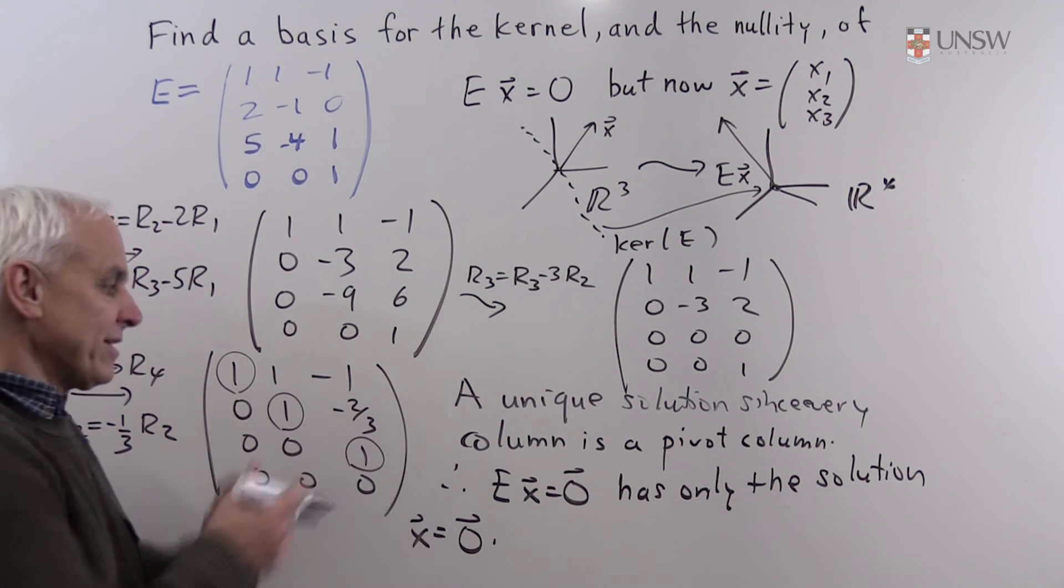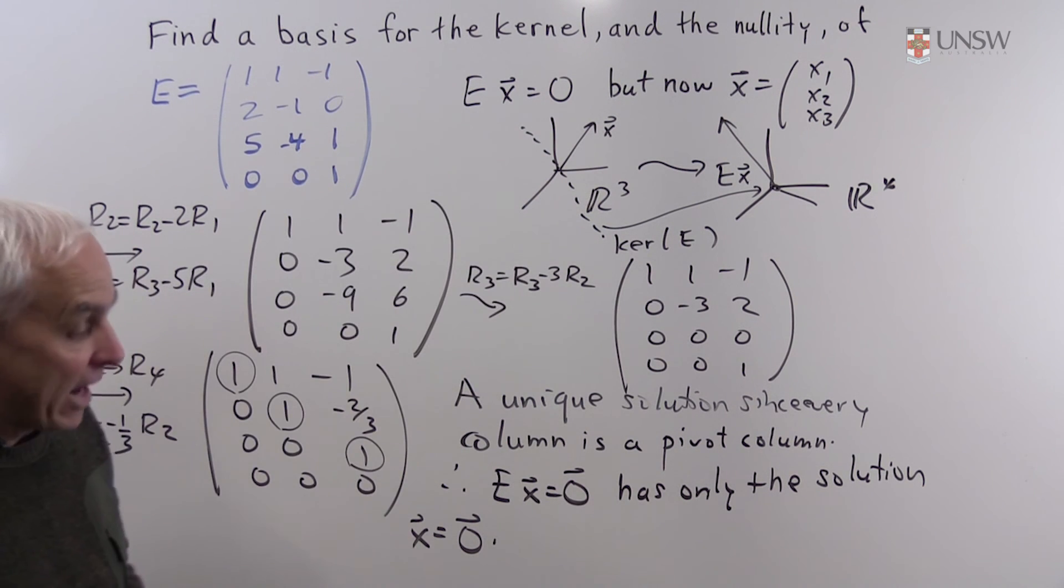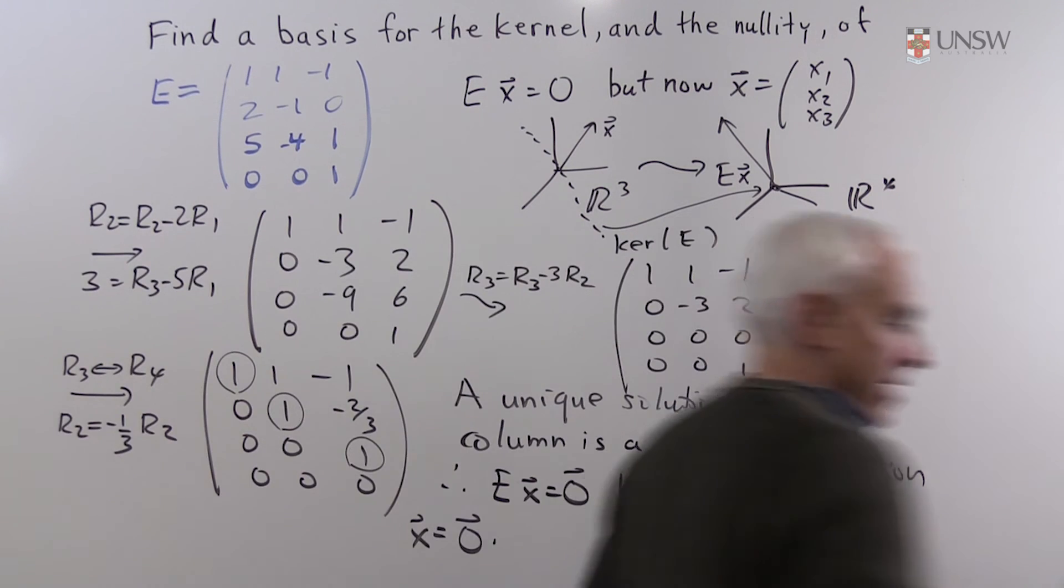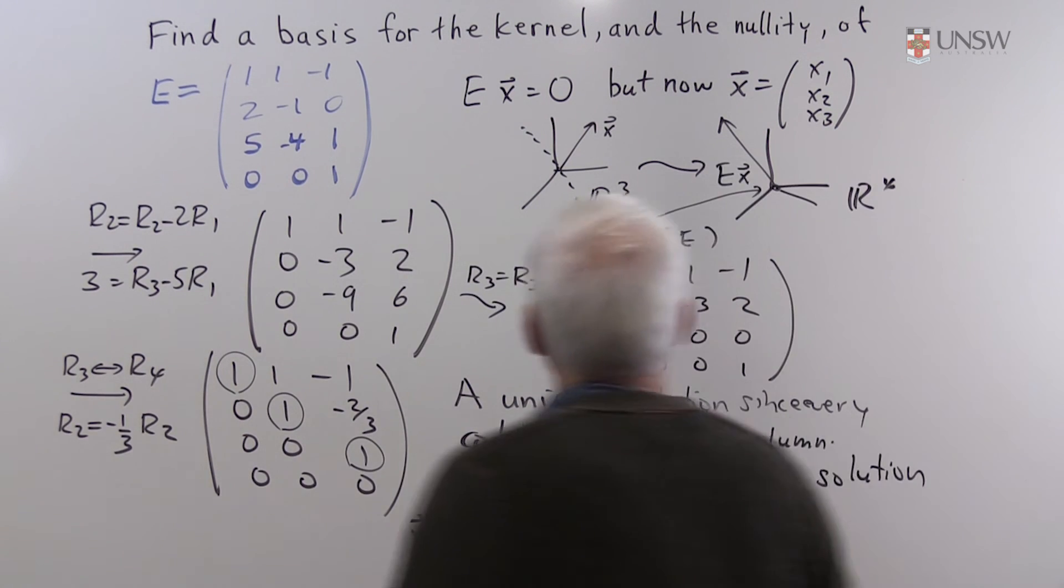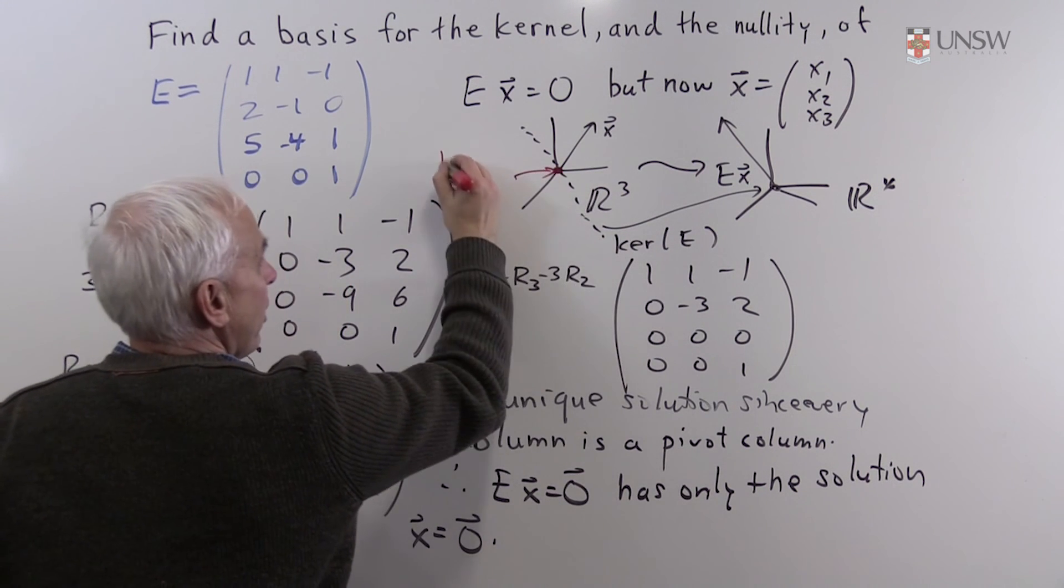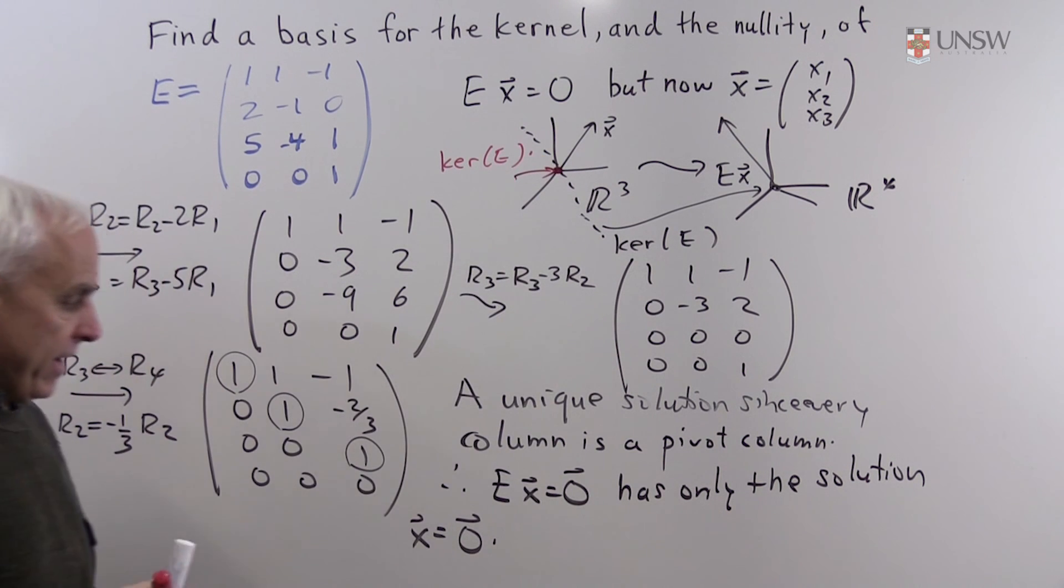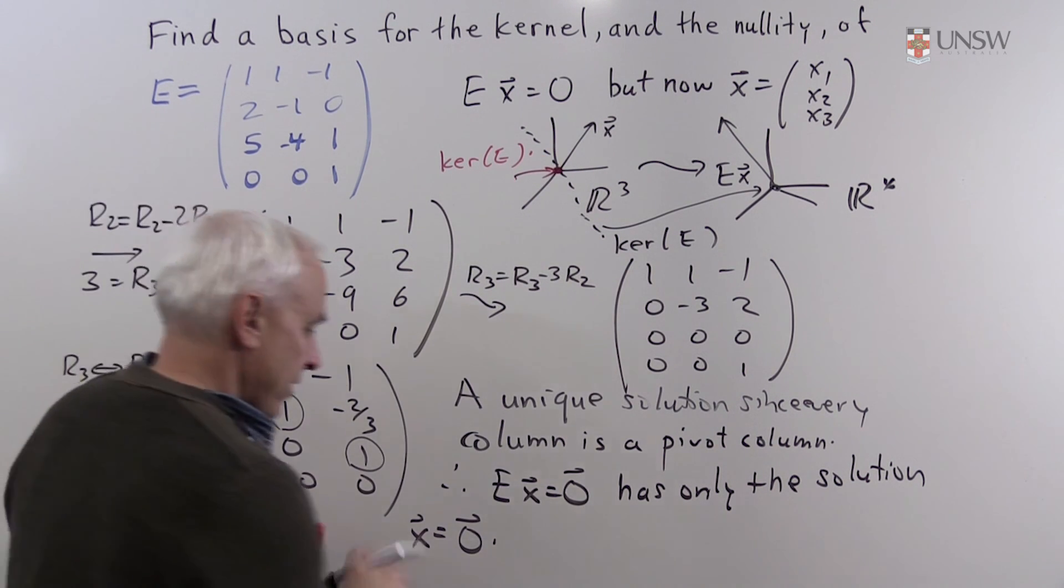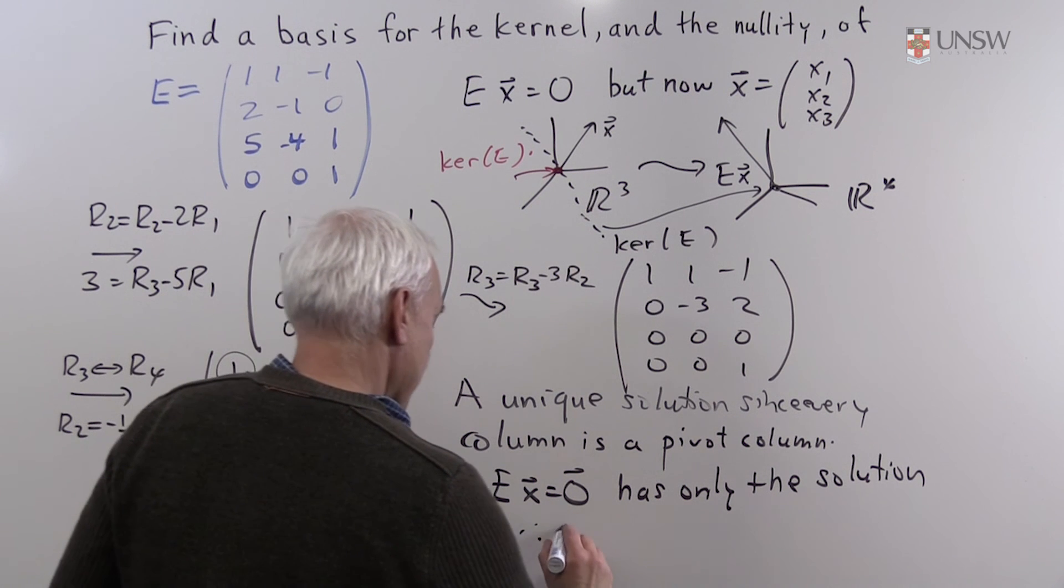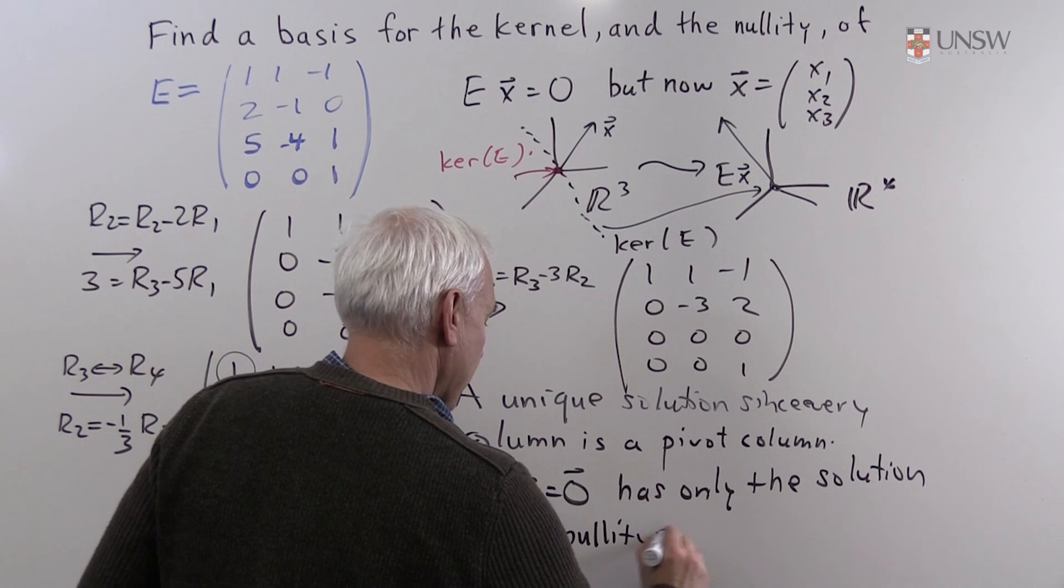So that's the solution. It's the only solution. And that's telling us that if we go back to this diagram, the actual situation is that the kernel looks like just the point. So there's the actual kernel of E. And therefore, the nullity is 0.